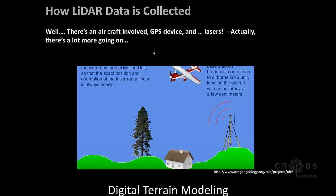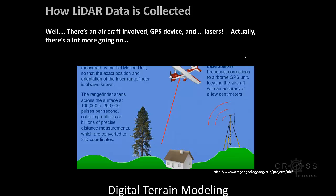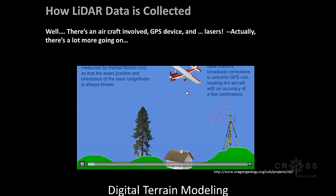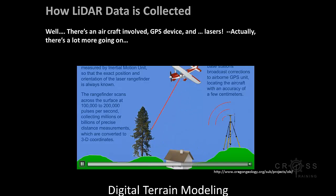So how is LIDAR data collected? There's an aircraft, a GPS device, and lasers involved. A laser is used to emit pulses of laser light onto the surface and the energy is reflected back to the laser collector. Distance from the laser to the surface, surface type, and other information can be determined from the intensity and time of the pulse return. A thousand pulses per second are emitted while the aircraft flies over an area of land, measuring the time it takes for the light to return to determine the ground elevation.